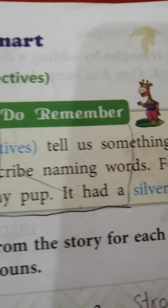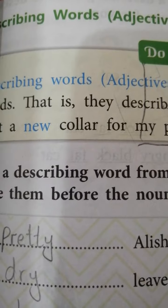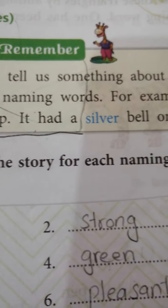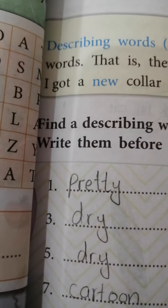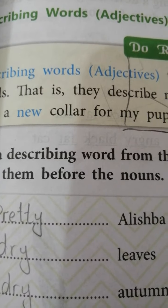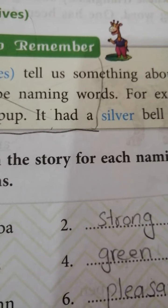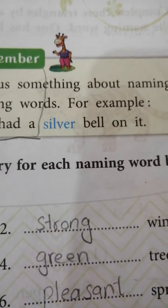The naming words — Alishwa is a naming word, leaves is the name of something, autumn is the name of a season, basket, movie — all these are naming words. So describing words tell us something about naming words. For example: I got a new collar for my pup, and it had a silver bell on it.